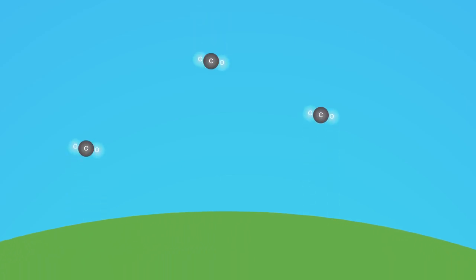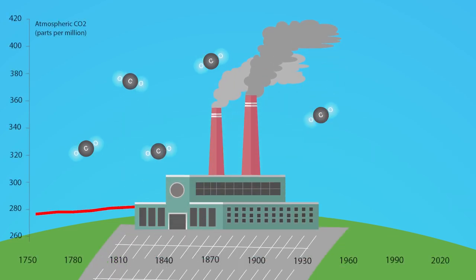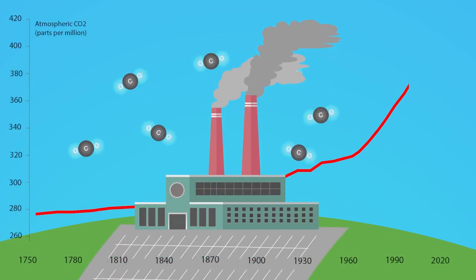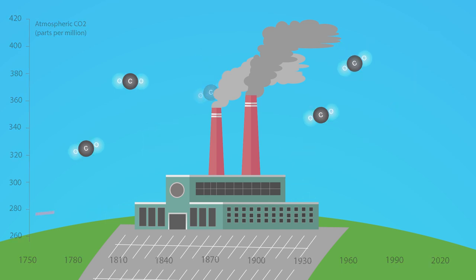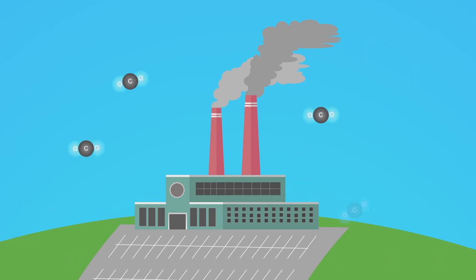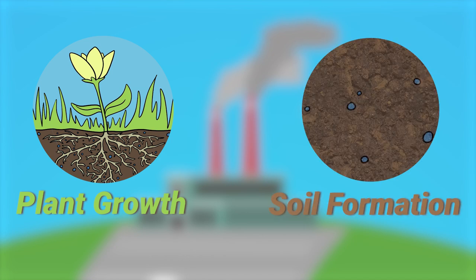Carbon dioxide is naturally occurring within our atmosphere, but the levels have risen dramatically since the industrial revolution and the burning of fossil fuels. But there are natural ways to pull down CO2 from the atmosphere. The most important are plant growth and soil formation.